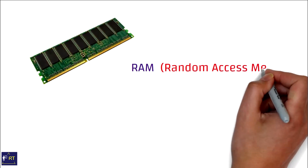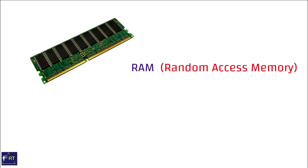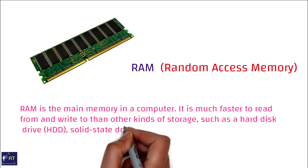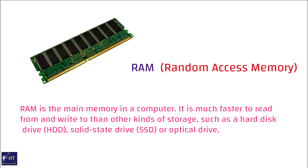RAM — Random Access Memory. RAM is the main memory in a computer. It is much faster to read from and write to than other kinds of storage such as a hard disk, solid state drive, or optical drive.